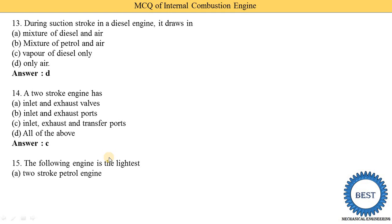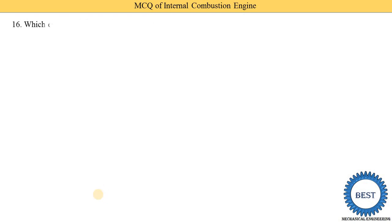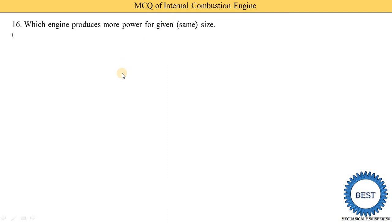Next MCQ: which of the following engine is the lightest in weight? Option A: two-stroke petrol engine, option B: two-stroke diesel engine, option C: four-stroke petrol engine, option D: four-stroke diesel engine. The correct answer is option A — the two-stroke petrol engine has the lowest weight compared to the others.